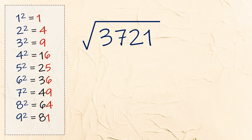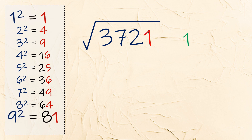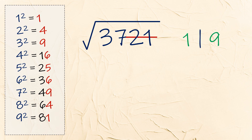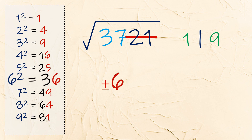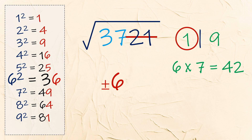Next, the square root of 3721. Last digit is 1, so we have 1 or 9. Cross out the last two digits — now we have 37. Closest to 37 is 36, so the first digit is 6. Multiply 6 by the next number, 7 — we get 42. Since 37 is less than 42, the answer is positive and negative 61.